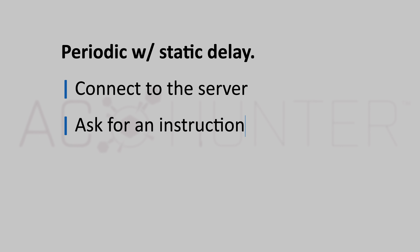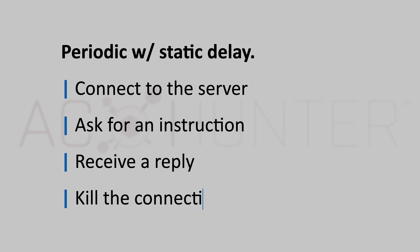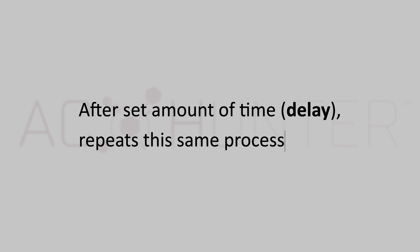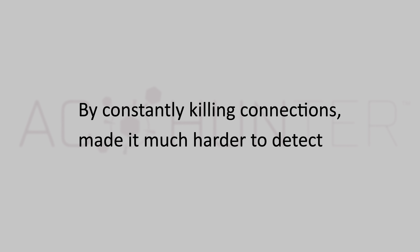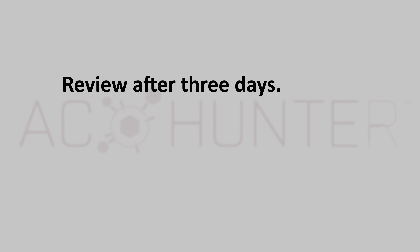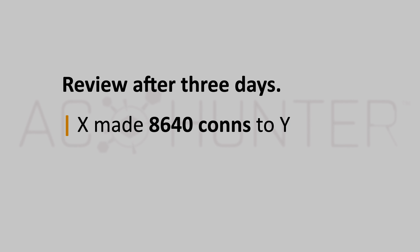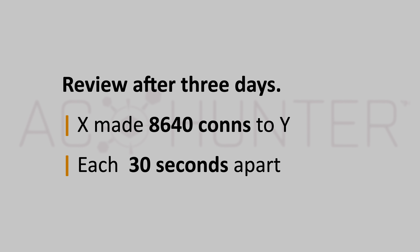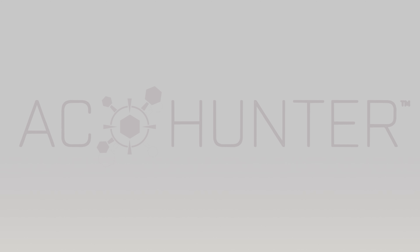The first improvement was the shift to periodic connections using a static delay. Instead of maintaining one long continuous connection, the client would connect to the server, ask for instructions, possibly send data, receive a reply, and kill that connection. Then after a set amount of time called the delay — say 30 seconds — it would reconnect and repeat the process. This eliminated the easily recognizable long-standing connections. However, defenders could still spot the fixed interval pattern: after three days, one might observe 8,640 connections to an external host with each connection occurring exactly 30 seconds apart — a clearly unusual pattern.